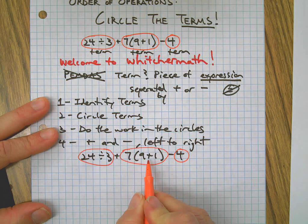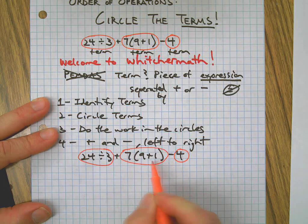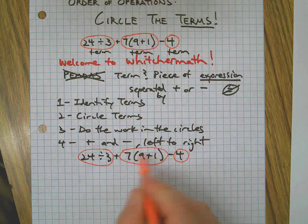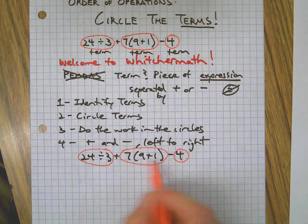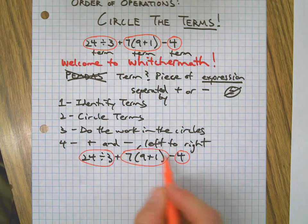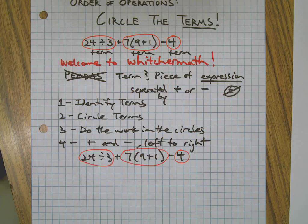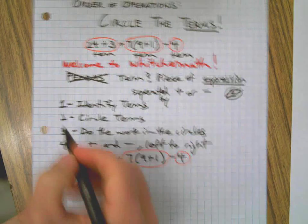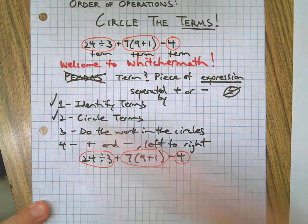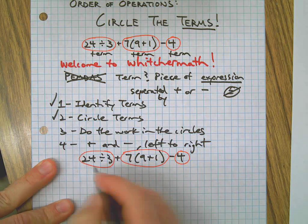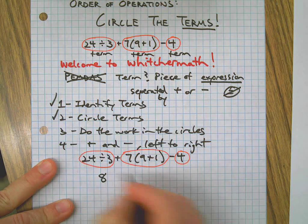You might think, hey Mr. Witcher, what's up? There's a plus sign in there, shouldn't we circle 7 times 9? Well, the addition sign here is inside parentheses, which means that needs to get done first, so it's a term within a term, a nested term if you want to think of it that way. There, we identified the terms.